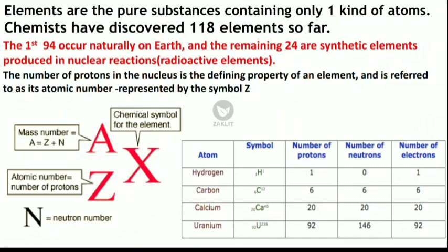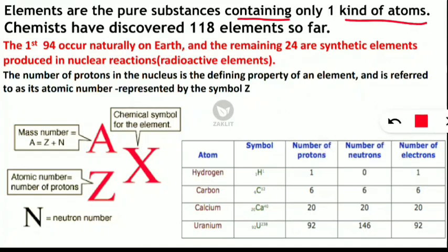No need to worry if you are not strong in chemistry — this video is very simple. So first, what are elements? Elements are pure substances containing only one kind of atom. If you have more than one kind of atom, they are called compounds. Chemists have discovered 118 elements so far. The first 94 elements occur naturally on Earth, and the remaining 24 are synthetic elements.